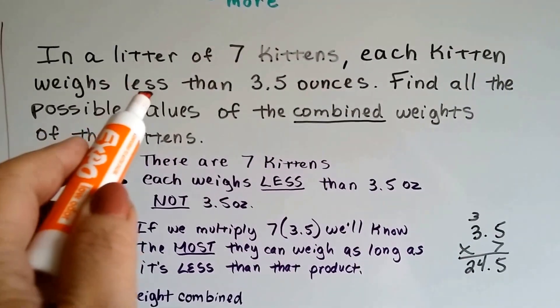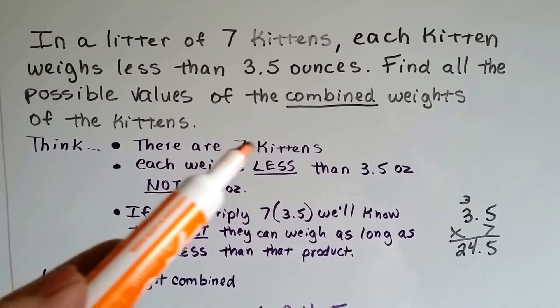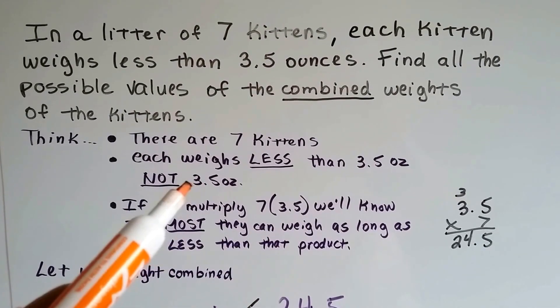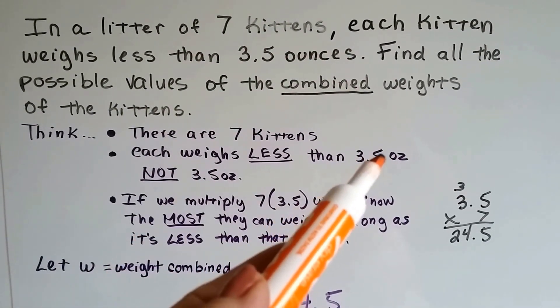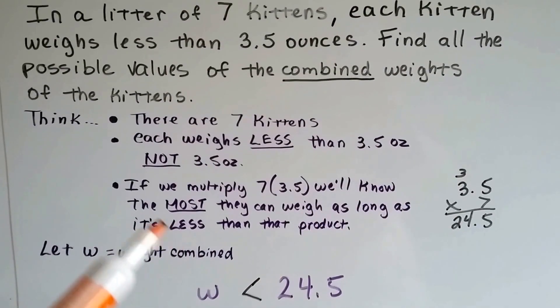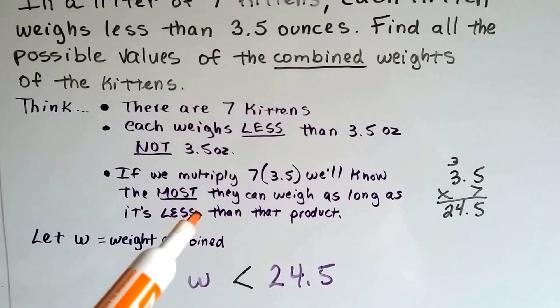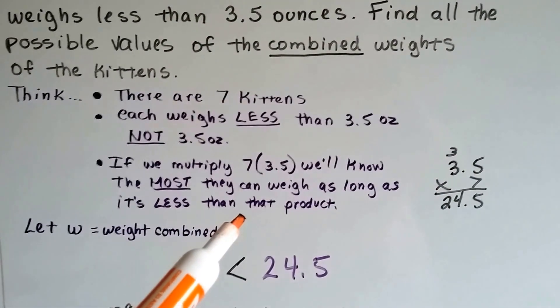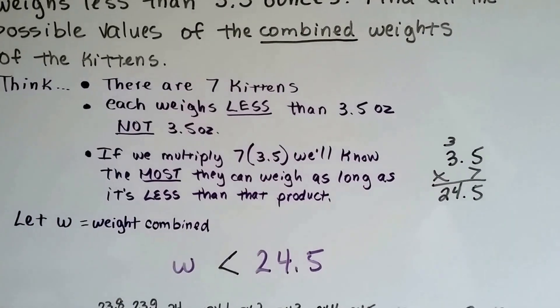Well, it's really important that it says they weigh less than 3.5 ounces. There's seven kittens, each weighs less than the 3.5 ounces, not 3.5. So it could be 3.4999, right? Well, if we multiply the seven times the 3.5, we'll know the most they can weigh as long as it weighs less than that product. It just can't be equal to it as long as it's less than that.